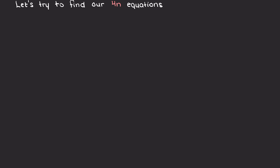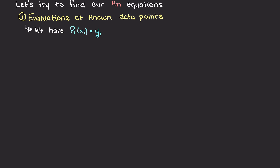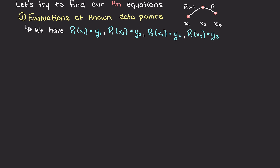Let's try to find our 4n equations. Firstly, we will have some known data points — these are the input-output pairs that we are interpolating through. Because each data point will share a spline, we actually get 2n equations. Therefore, we just need to find 2n more equations to be able to begin solving our system of equations.